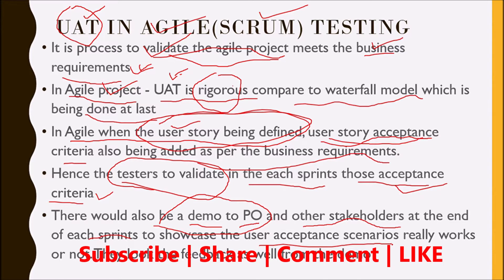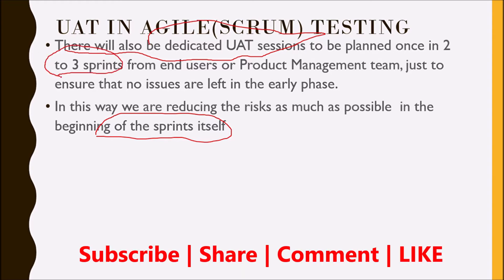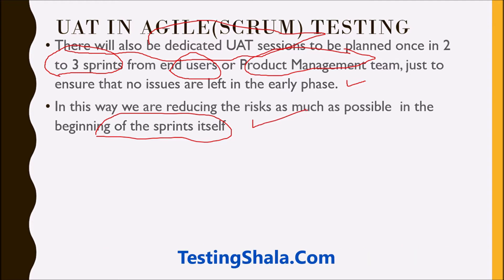In this way, the product owners and stakeholders give feedback right there and then for the given sprint user story, reducing the risk as much as possible from the beginning of the sprints. In Agile, we are not going to wait until the end of the release to get feedback from end users. There will also be a third type of UAT session done every two to three sprints, where testing is done from end users or the product management team, just to ensure they also give feedback in the respective sprints — reducing the risk associated with UAT being done at the last stage as in the waterfall model.